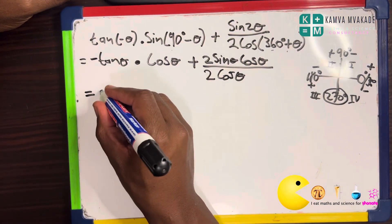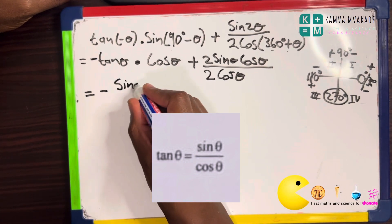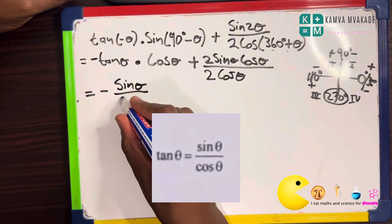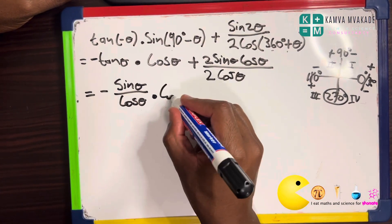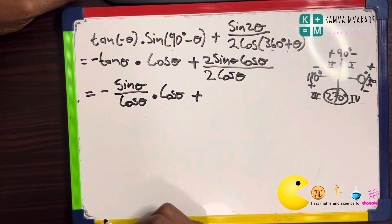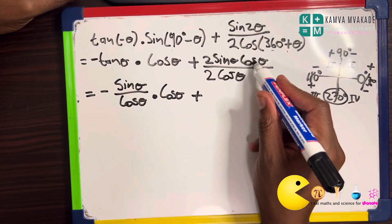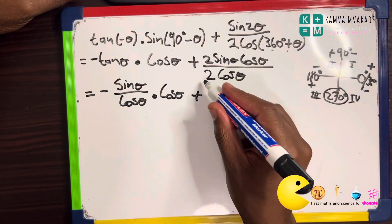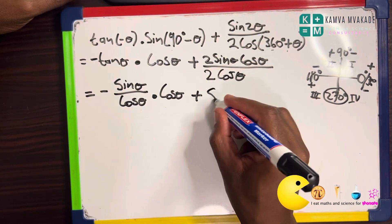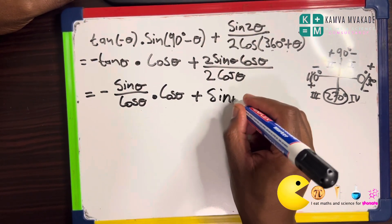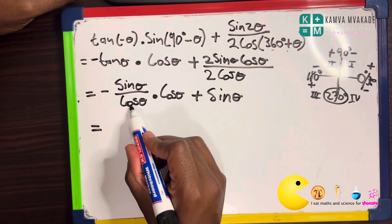We substitute the identity for tan: tan theta equals sine theta over cos theta. Multiplying negative tan theta by cos theta gives us negative sine theta over cos theta, multiplied by cos theta. The cos theta in the numerator and denominator cancel out, and the 2 in the numerator cancels with the 2 in the denominator, leaving us with sine theta.